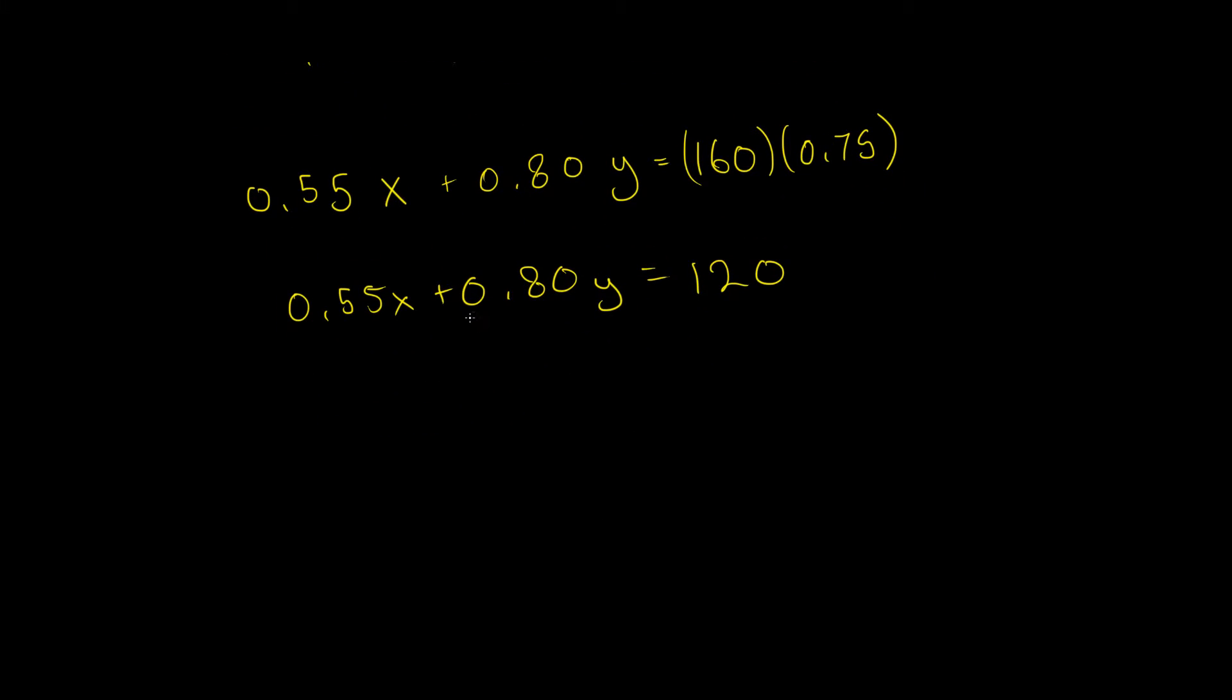And what else do I know? Well, X is the amount of the first juice that I add, and Y is the amount of the second juice that I add. So in total, I'm mixing together 160 pints of juice. So I can say X plus Y equals 160.